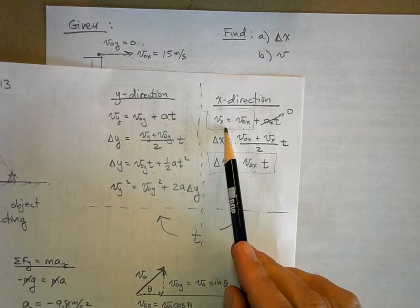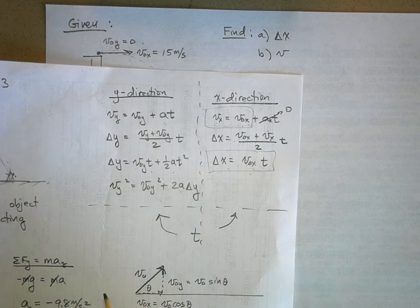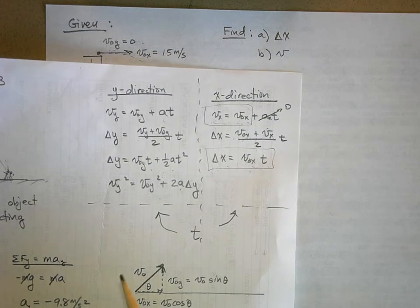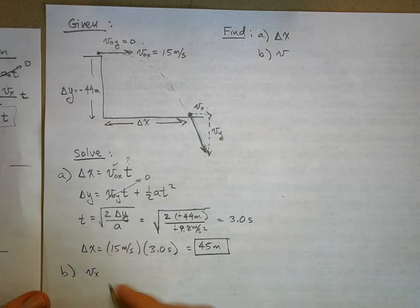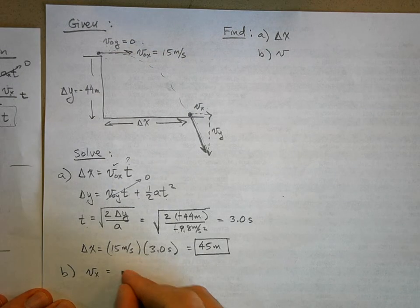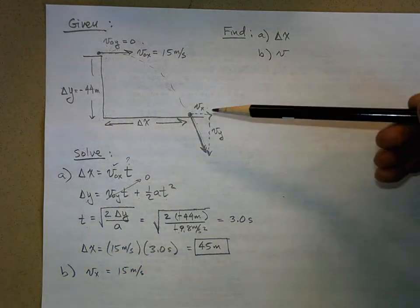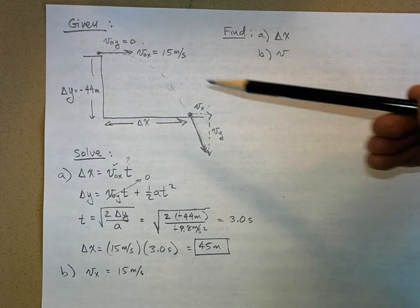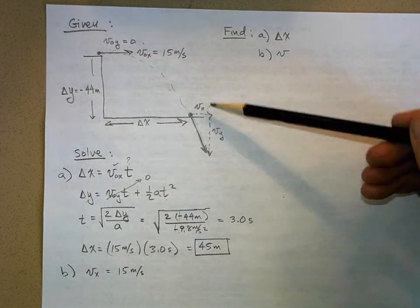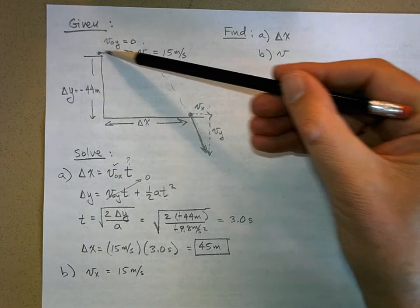The equation for Vx: the velocity in the x direction simply equals V-naught-X — in other words, the velocity in the x direction doesn't change. So Vx equals 15 meters per second. This velocity stays constant in the x direction.